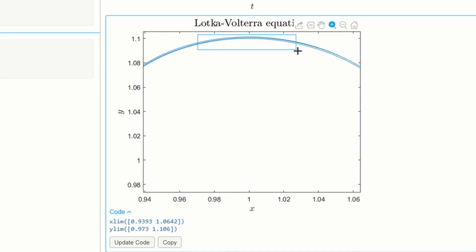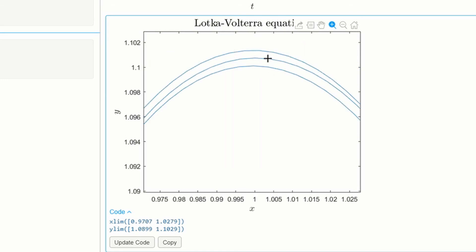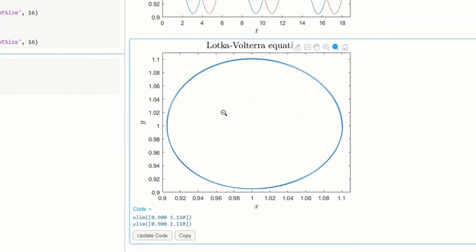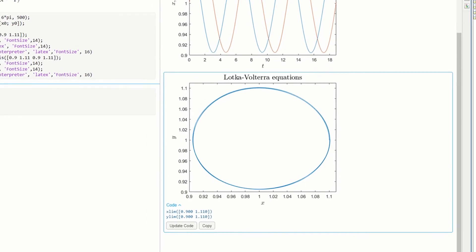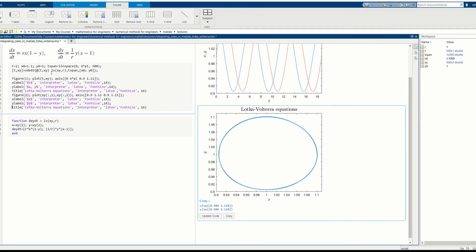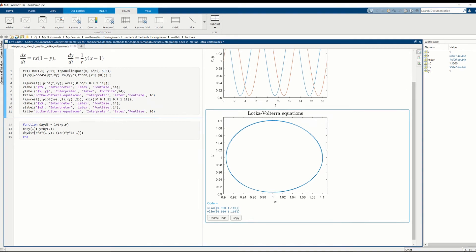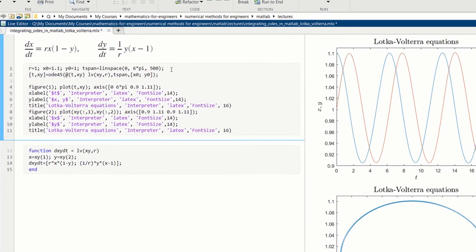And here you see some distinct curves here. So it's not exactly periodic. The problem here is that the accuracy of ODE45, the default accuracy, is just not good enough to see that the function is exactly periodic. So we can change the accuracy.